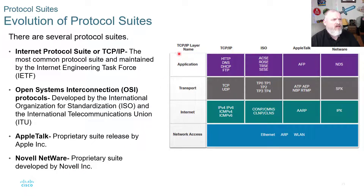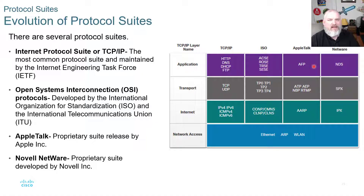Looking at the layer diagram: we have the TCP/IP layer names — HTTP, DNS, and DHCP at the application layer. ISO governs these, and AppleTalk used AFP. You don't really need to memorize the AppleTalk and Novell columns; just be familiar that they existed. The main ones used today are TCP/IP and OSI.